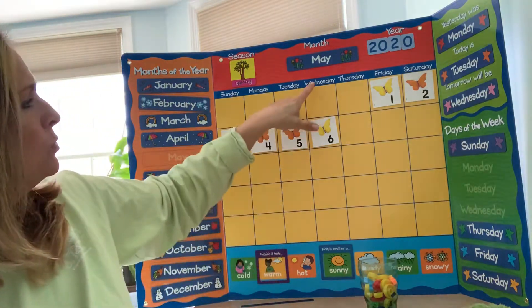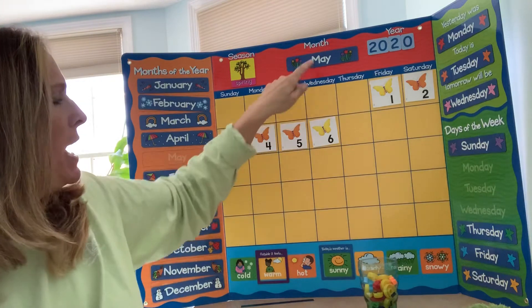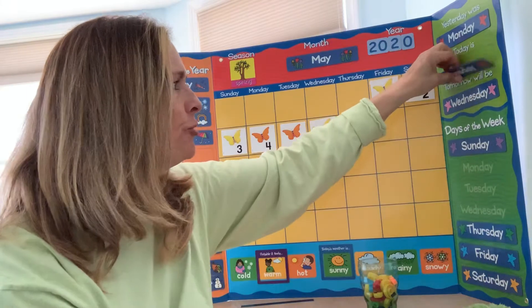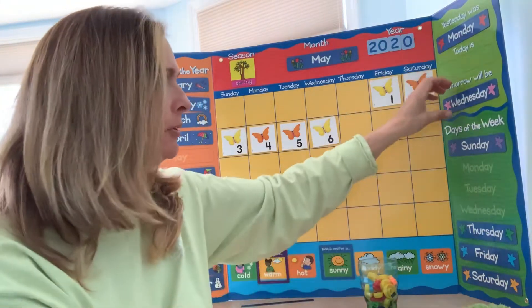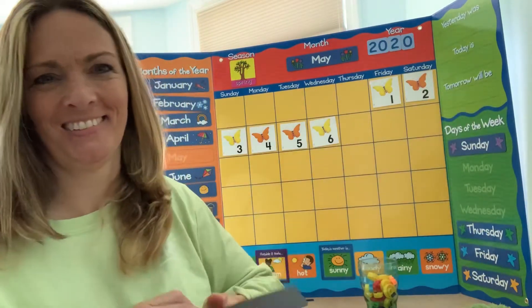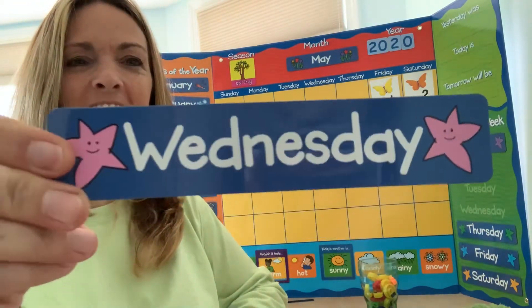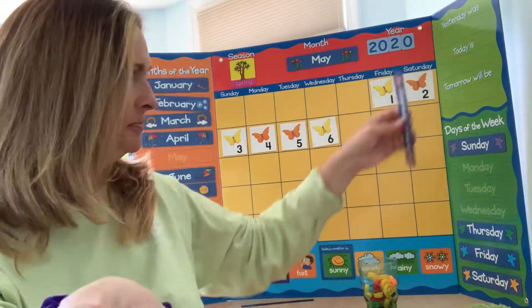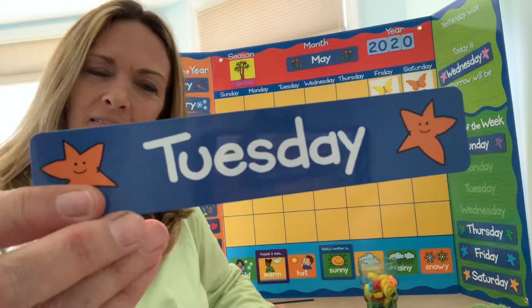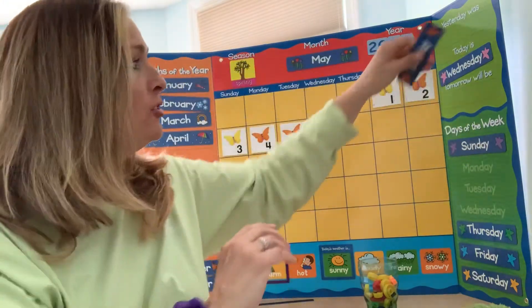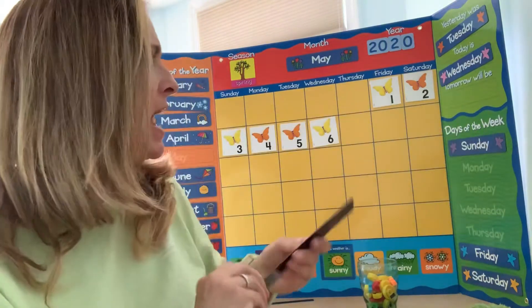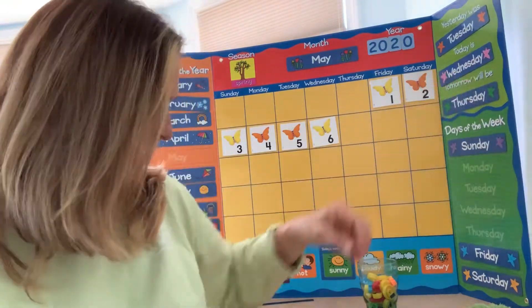So today is Wednesday, May 6th, 2020. So let's have some mirror words. Ready? Mirror words. Today is Wednesday. Yesterday was Tuesday. Tomorrow will be Thursday. Excellent job.